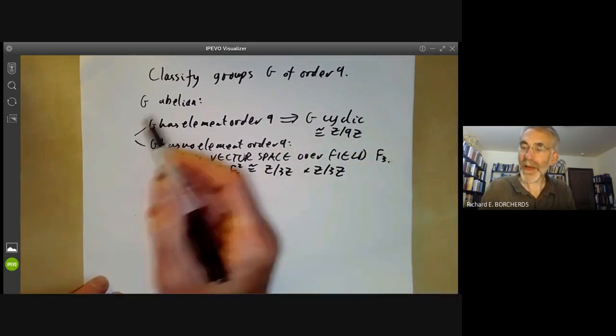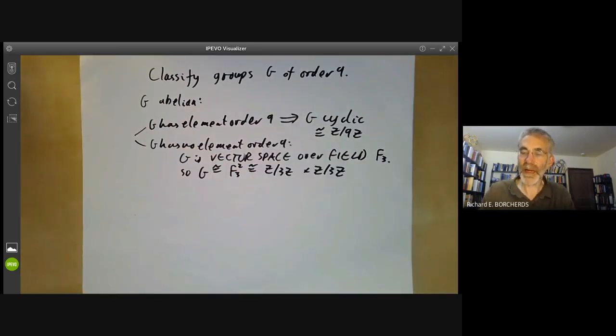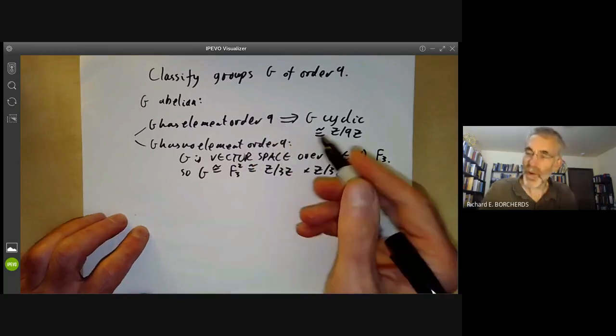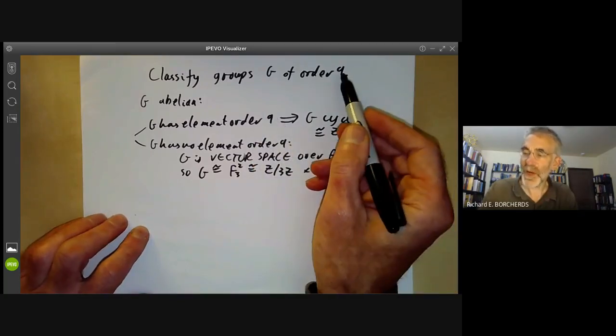So abelian groups of order nine are quite easy to classify. You notice, by the way, that this works for groups of order P squared for any P.